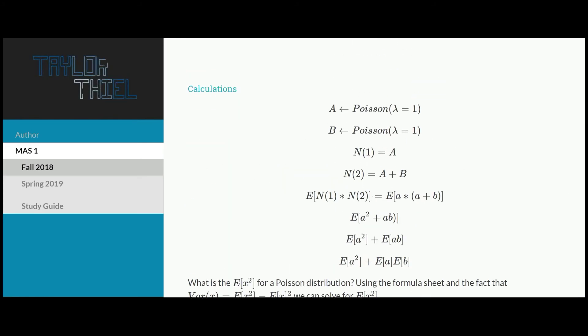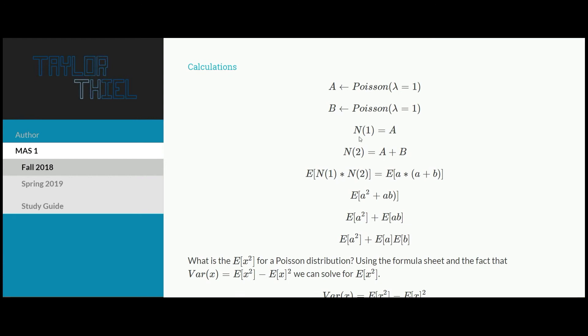With those definitions, we can then rewrite n of 1 is going to be equal to that sampling distribution A, where n of 2 is then going to be equal to whatever A is plus B. This is capturing that n of 2 is greater than or equal to n of 1. With that in mind, we can rewrite what the question is asking.